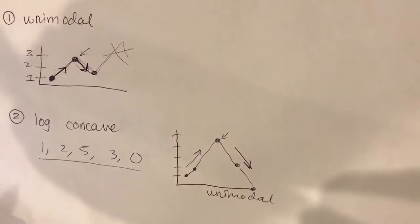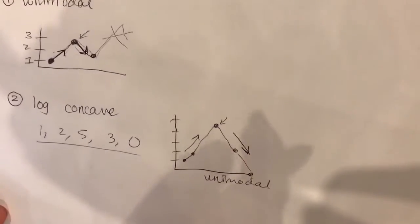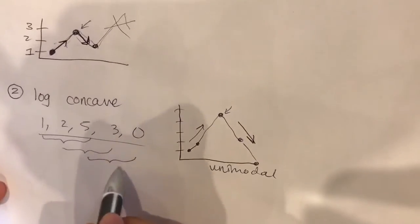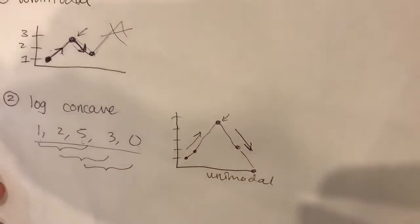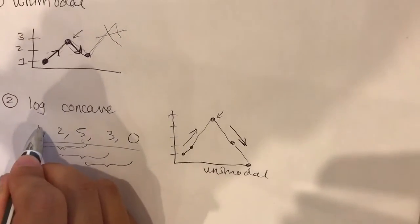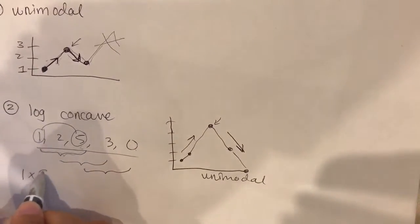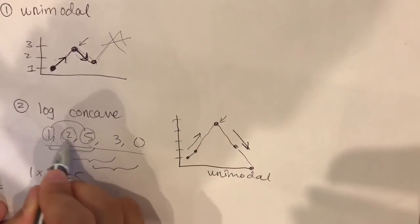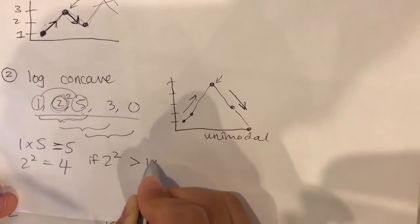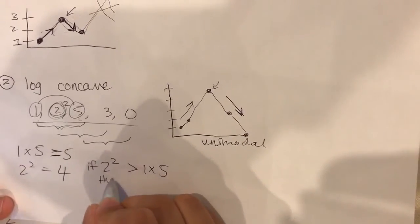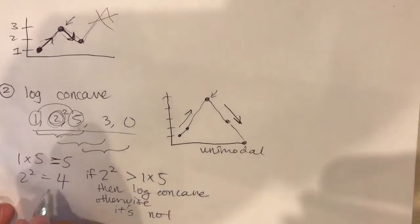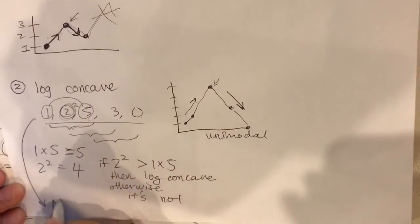But now let's see if it's log concave. Log concave means for any three consecutive terms that are linked together, for example 1, 2, 5 or 2, 5, 3, any of these three. If we have any three numbers in the sequence, we want to see if we take the two outer numbers and multiply them together, namely 1 times 5 equals 5. If the square of the middle number, so 2 squared, if it's bigger than the product of the two outer numbers, then it's log concave. In our case, 4 is not greater than 5, so this sequence is not log concave.